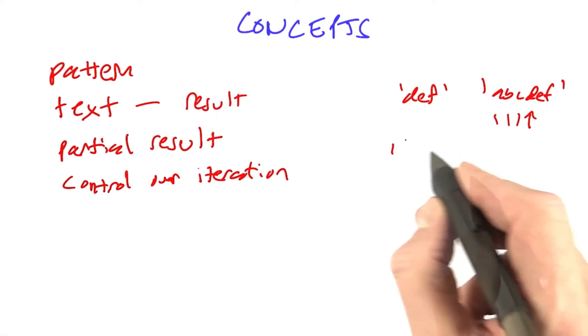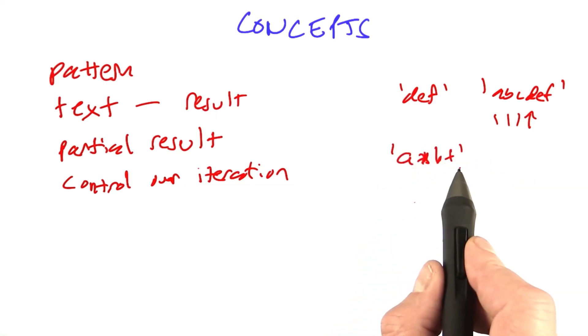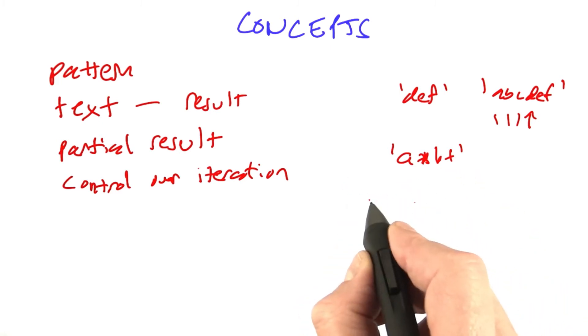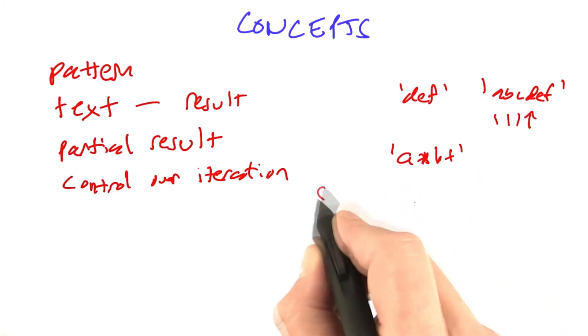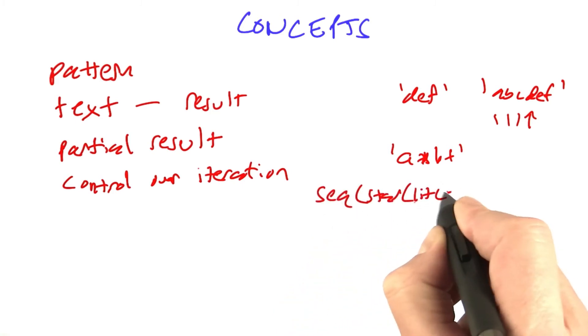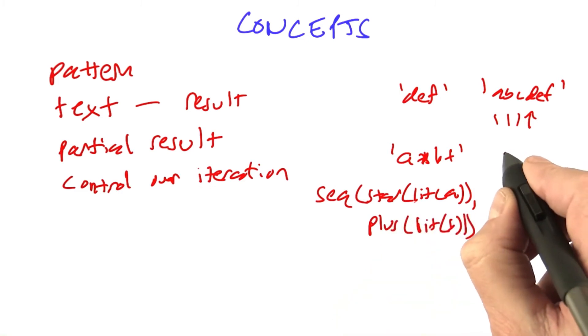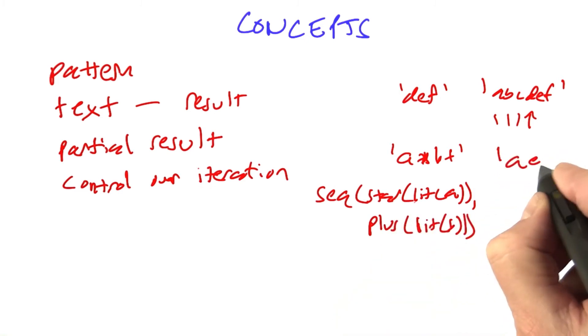But what if we're matching with the pattern, let's say we have the expression a star b plus, any number of a's followed by one or more b, and in our API notation, we would write that as the sequence of star of literal a plus of literal b, and let's say we're matching that against the string a, a, a, b.